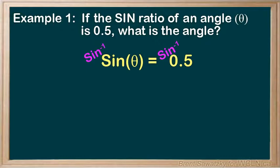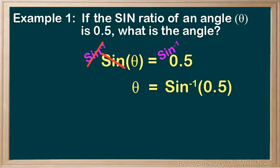So on the left, we have the inverse sine and the sine will cancel each other out. Perfect. It's isolated. On the right, we have to figure out what the inverse sine of 0.5 is.